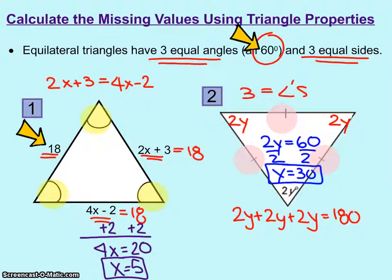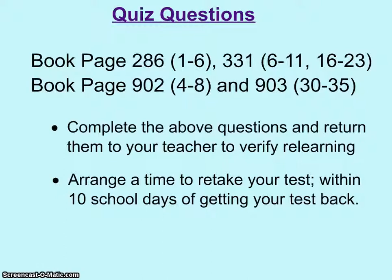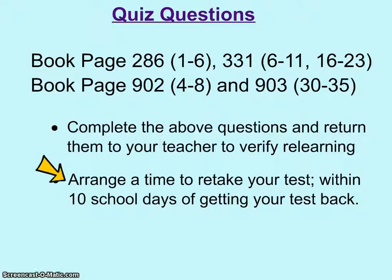What I'd like you to do now is summarize what we've talked about for equilateral triangles. After you're done, you have a review assignment: the book, page 286, and the book, page 902. After you complete those questions, come and talk to your teacher to set up a time to retake the test and improve your score.